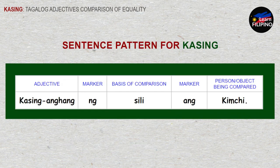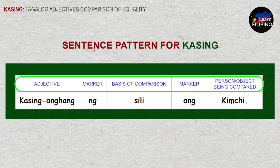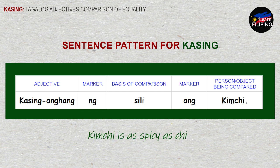You may follow this sentence pattern for 'kasing' as a guide: kasing + adjective + marker + basis of comparison + marker + the person or object being compared. For example: 'Kasinganghang ng sili ang kimchi' — kimchi is as spicy as a chili pepper. Note that you shouldn't restrict yourself to this word order, because the person or object being compared can also come before the basis of comparison.